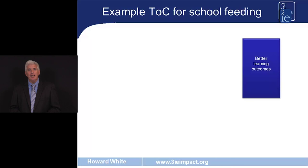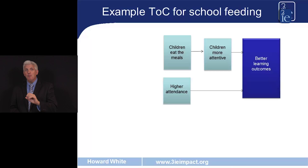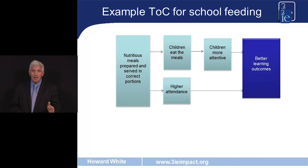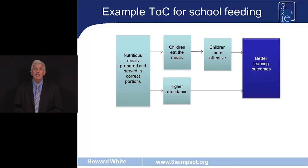Let's see an example from a school feeding program. Like many education interventions, school feeding aims to improve learning outcomes. It does that both by children being present and attending school and being more attentive whilst they're there. That happens because the school feeding program encourages parents to send their children to school and increases the attention of those children as they're not hungry during the school day. There are assumptions underlying this short segment of the theory of change that we're showing in this slide.